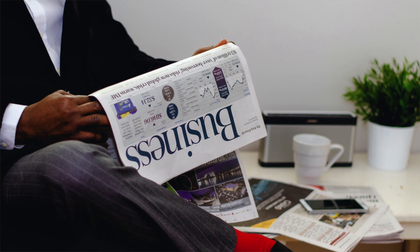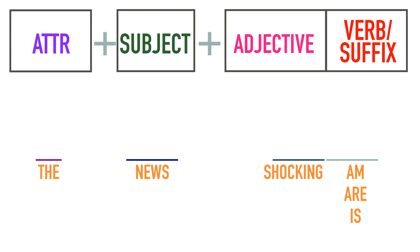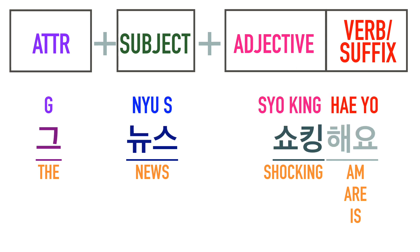Now let's practice. Imagine you are talking about shocking news that everybody knows. The word for 'news' is 뉴스, and for 'shocking' we say shocking. How would you say 'that news' or 'the news is shocking' in Korean? The answer is: 그 뉴스, shocking해요.